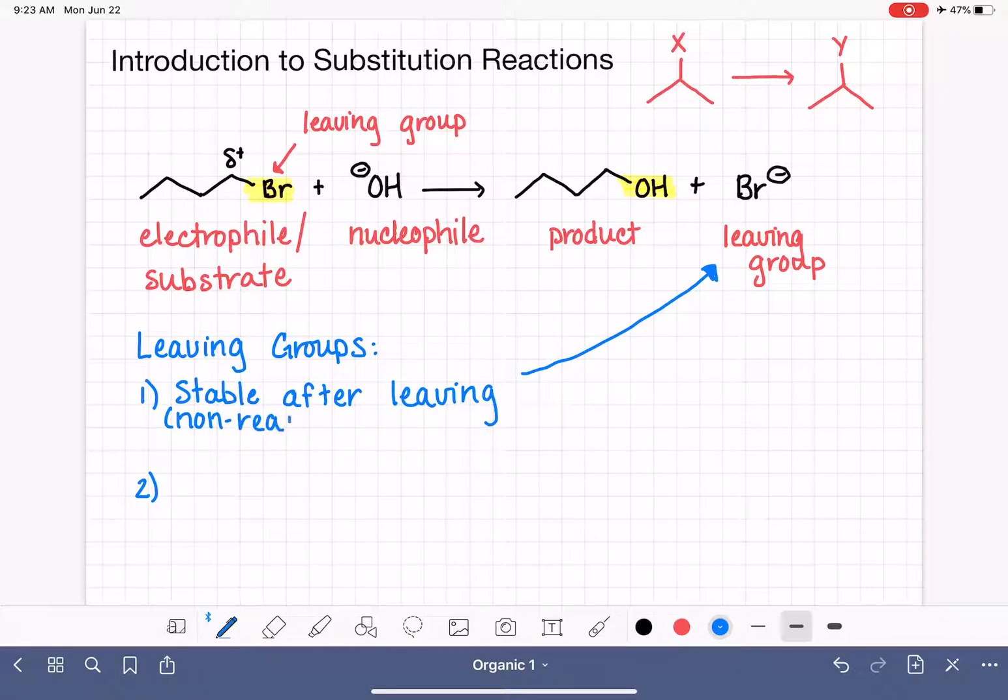The leaving group has to be a stable or not reactive, non-reactive compound. We need our leaving group to be willing to fall off of the molecule and then just exist as, in this case, a bromide ion, without attempting to react further with our product or anything else that might be left over in the reaction. So we needed to come off the molecule and to be happy staying off the molecule, just like this, in this case.